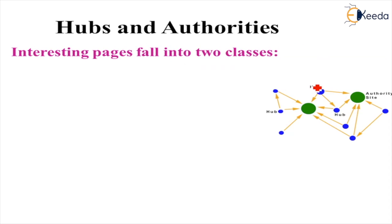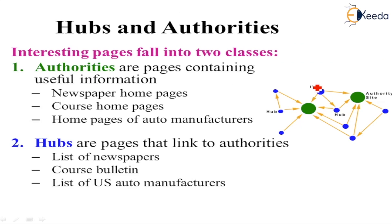Interesting pages fall into two classes: Hubs and Authorities. Authorities are pages containing useful information — newspapers, homepages, course homepages, homepages of auto manufacturers. These are all known as authority pages. In the diagram, the green nodes represent authorities, where many links are coming in from hubs. Hubs are the pages that link to authorities — lists of newspapers, course bulletins, lists of US auto manufacturers. Each hub acts like an index that points to an authority.